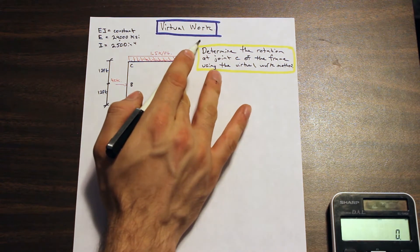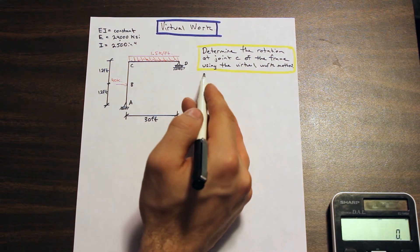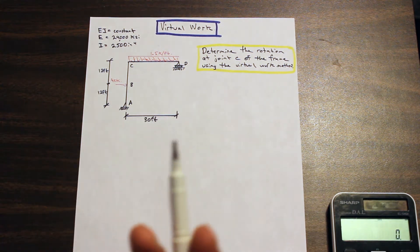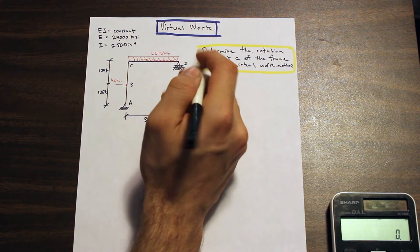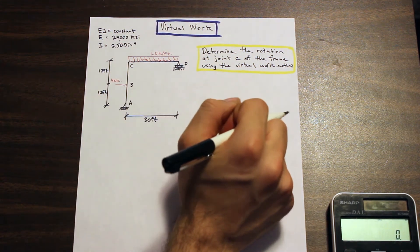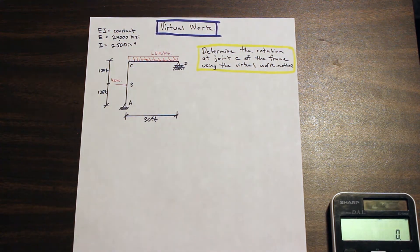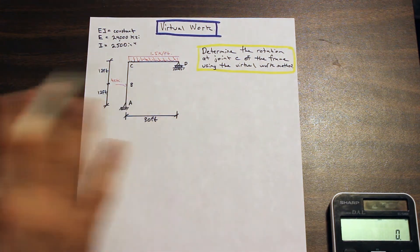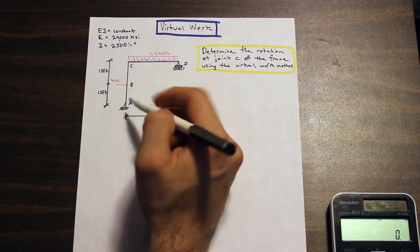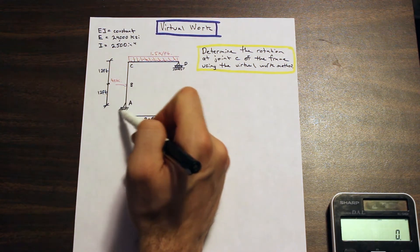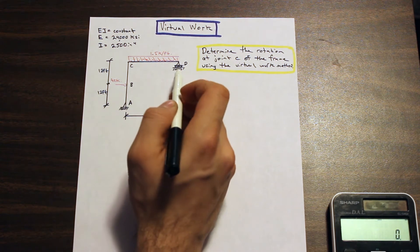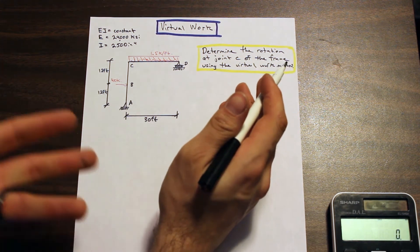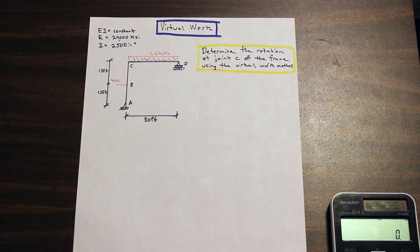Virtual work is only applicable in determinate structures. You will see it used in the method of consistent deformations, where you remove a redundant force and the resulting structure becomes determinate so you can use the virtual work method. But here we're just given a determinate structure. Sometimes on a test they won't tell you to use the virtual work method — they'll just say solve it. So let's count the reactions: we have a pin, giving reactions in X and Y, and a Y reaction at D. That's three reactions and three equilibrium equations, so this is a determinate structure.